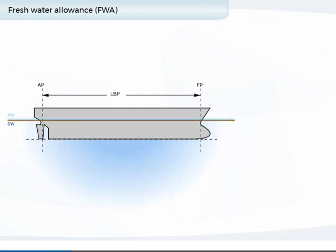Fresh water allowance is the number of millimeters by which the true mean draft changes when the vessel passes from salt water to fresh water, or vice versa.